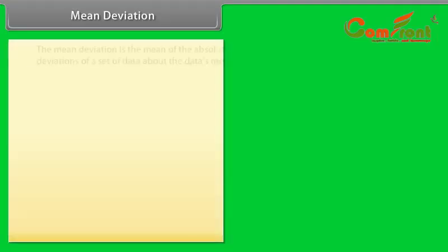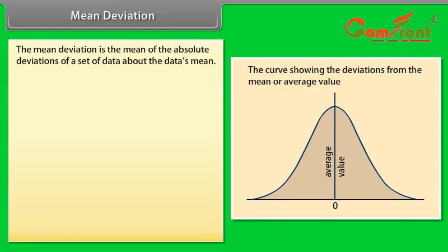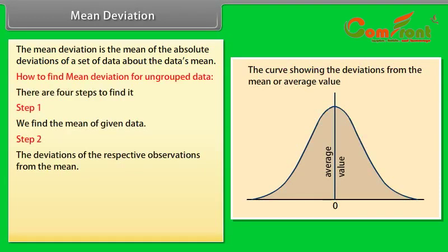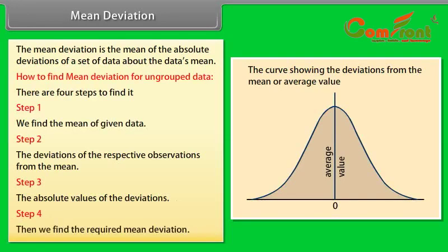Mean Deviation is the mean of the absolute deviations of a set of data about the data's mean. To find mean deviation for ungrouped data, there are four steps: Step 1 — find the mean of the given data; Step 2 — find the deviations of the respective observations from the mean; Step 3 — find the absolute values of the deviations; Step 4 — find the required mean deviation.